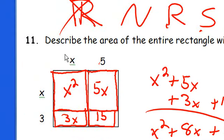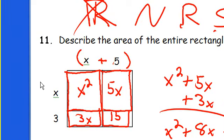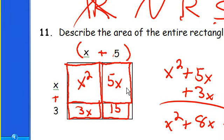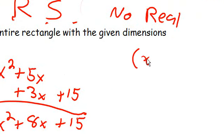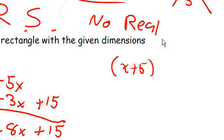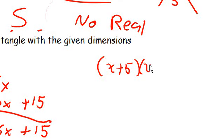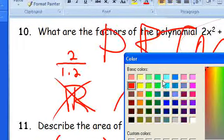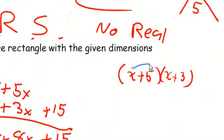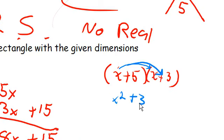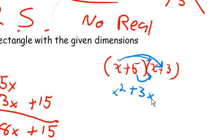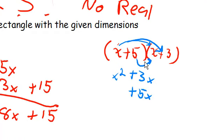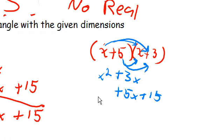And you'll notice that really this side length here could be considered x plus 5. And this side length here is x plus 3. And if we were to FOIL that, x plus 5 times x plus 3, I'll change colors. I like to change colors here. x times x would be x squared. x times 3 would be 3x. 5 times x would be 5x. And 5 times 3 would be 15.